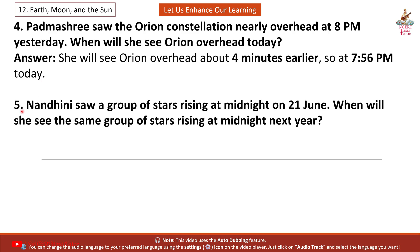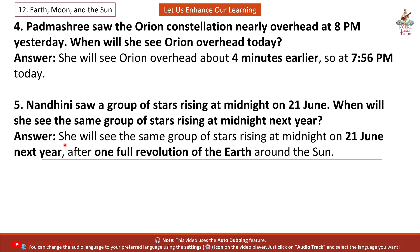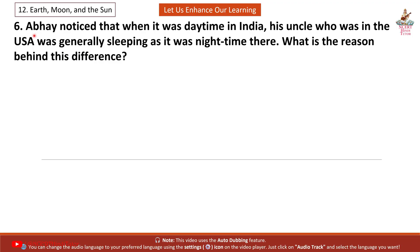Question 5. Nandini saw a group of stars rising at midnight on 21 June. When will she see the same group of stars rising at midnight next year? Answer: She will see the same group of stars rising at midnight on 21 June next year, after one full revolution of the Earth around the Sun.